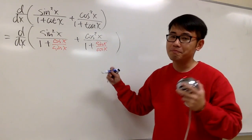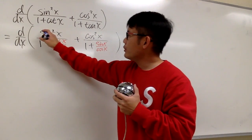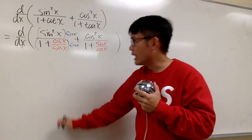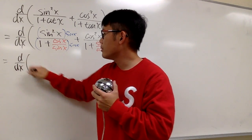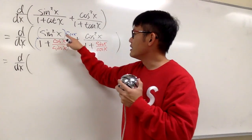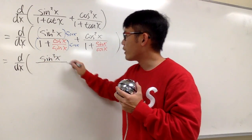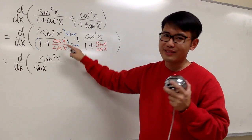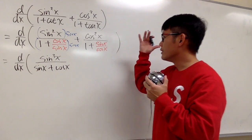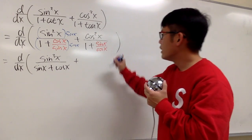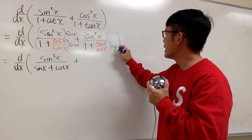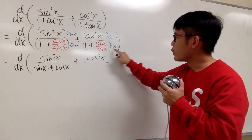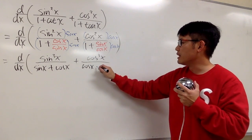We end up with complex fractions, so let's fix that. For the first one, I'm going to multiply the top and bottom by sine x. So sine squared x times sine x gives sine to the third power x, over sine x times 1 which is sine x, and we multiply to get plus cosine x. For the second part, I'm going to multiply top and bottom by cosine x, giving cosine to the third power on top, over cosine x, plus sine x.